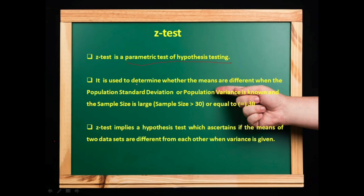It is used to determine whether the means are different when the population standard deviation or population variance is known and when the sample size is greater than 30 or equal to 30.